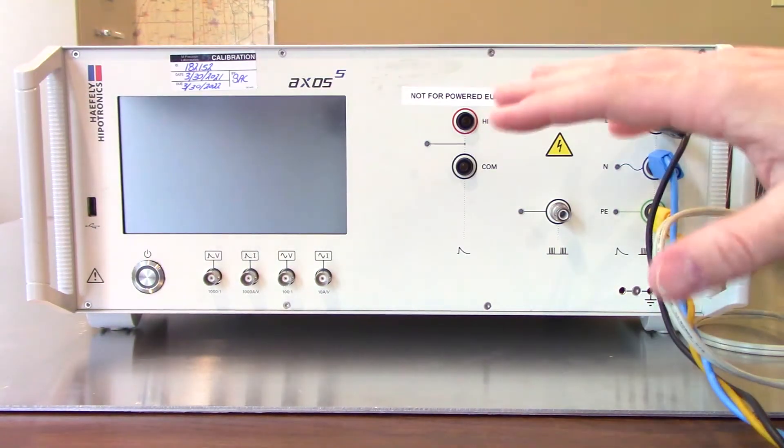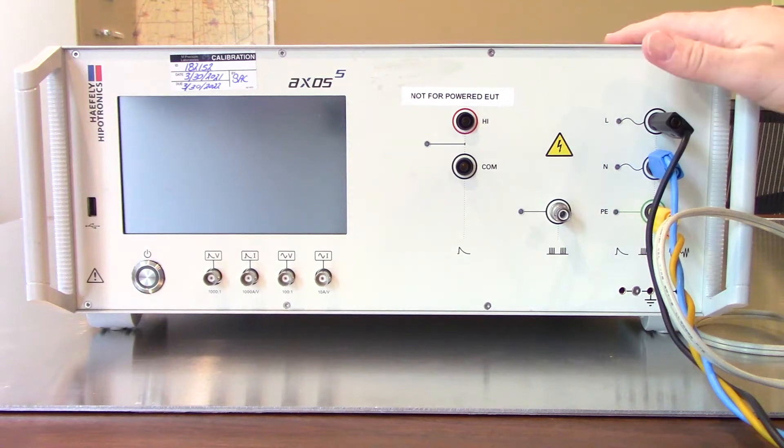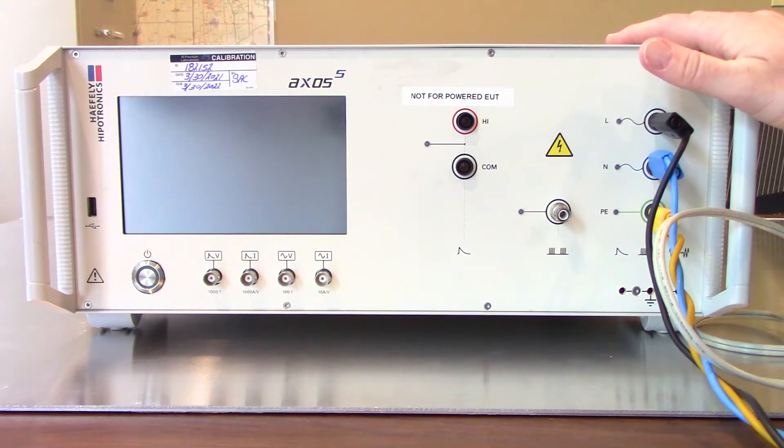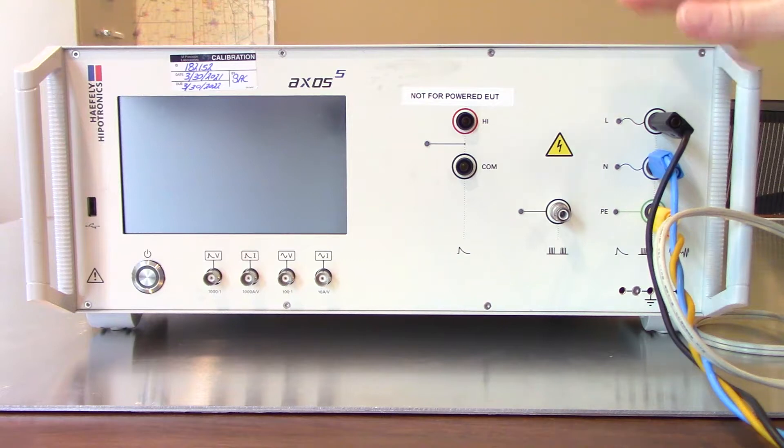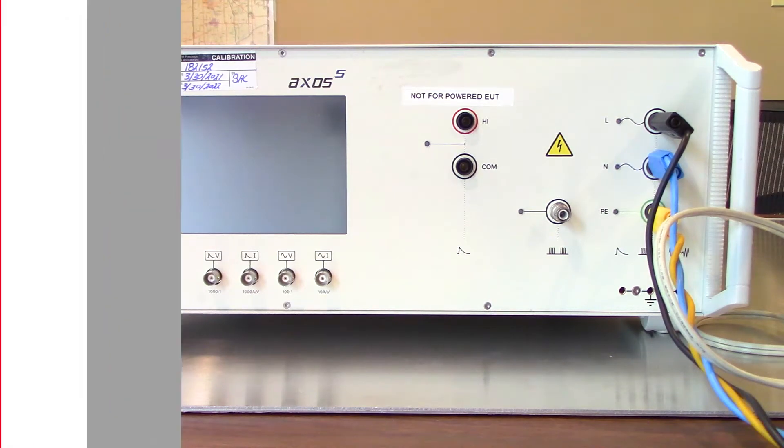That should be just about it from the front of the Haefeli Axos 5 test system. Let's go ahead and turn it around. I'll show you how to make connections going into your coupling decoupling network, which is built into your Haefeli Axos 5. Then we're going to start it up and I'll show you how to modify some of the different testing parameters to test to some of the IEC 61000-4-5 test levels.